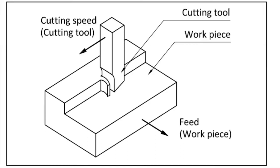Welcome. In this section we are going to discuss about the three important parameters, and how we can represent the expressions for those parameters in relation with the shaping operation. Specifically, what is the average cutting speed, what is the machining time, and what is the material removal rate.